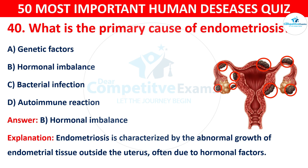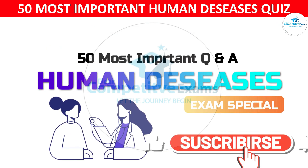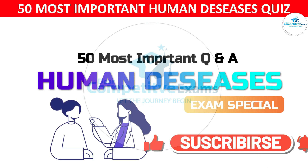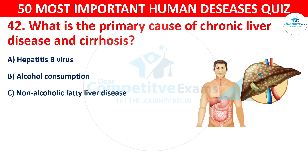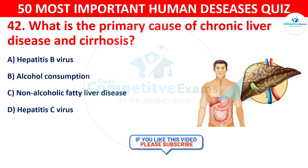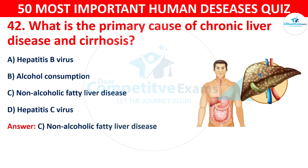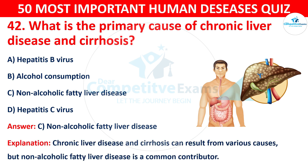Dear friends, if the video is helping you, please support us by liking, subscribing, and sharing our channel. Question 41: What is the primary cause of chronic liver disease and cirrhosis? Your options are: A) Hepatitis B virus, B) Alcohol consumption, C) Non-alcoholic fatty liver disease, or D) Hepatitis C virus. The correct answer is C — non-alcoholic fatty liver disease. Chronic liver disease and cirrhosis can result from various causes, but non-alcoholic fatty liver disease is a common contributor.